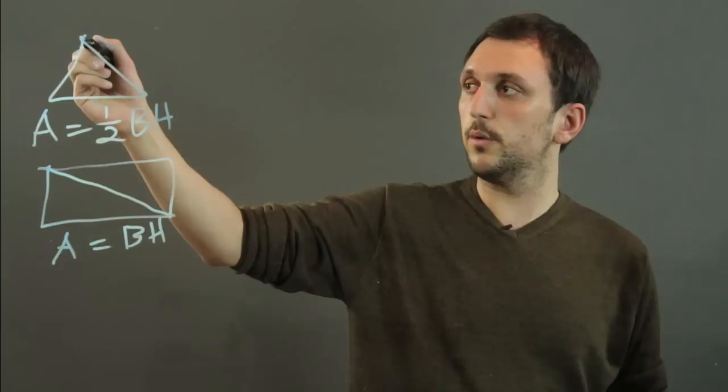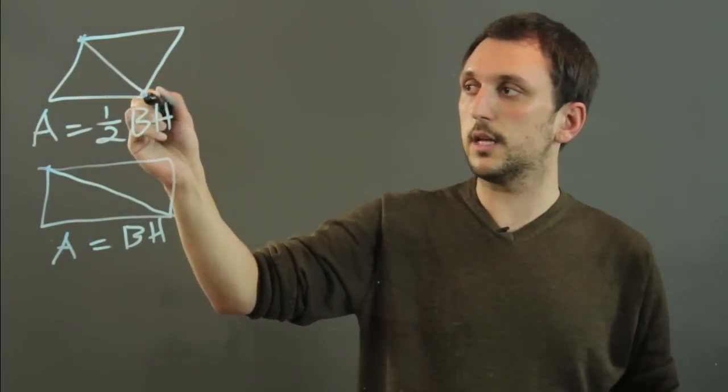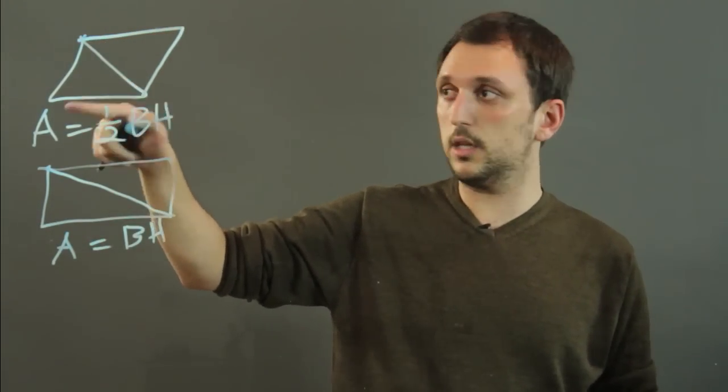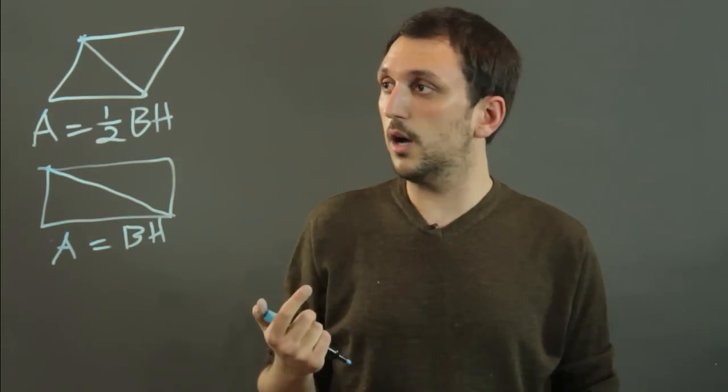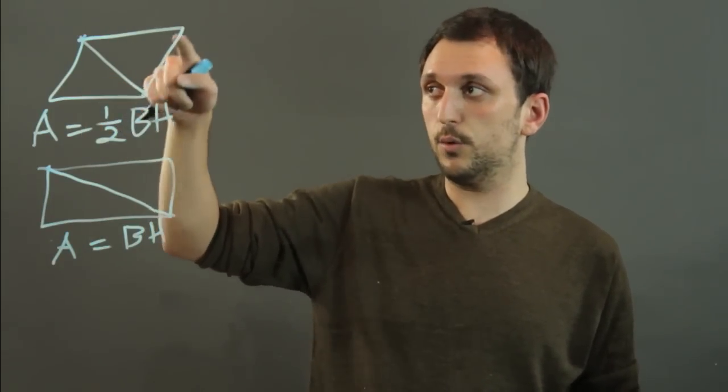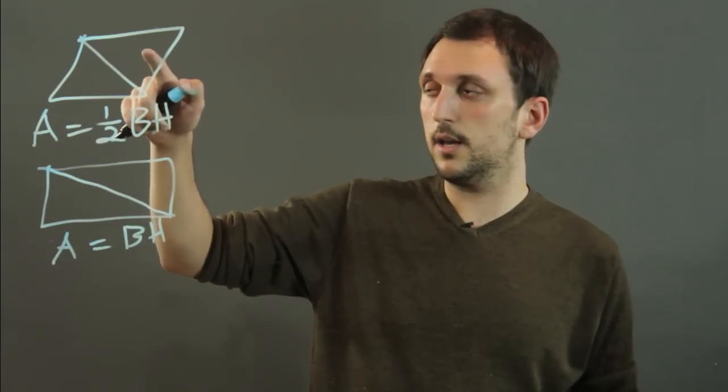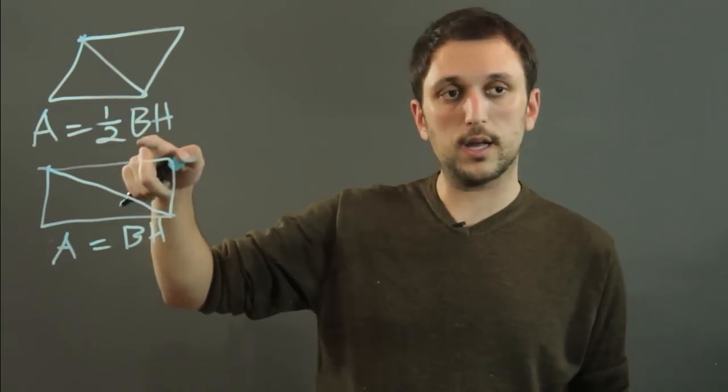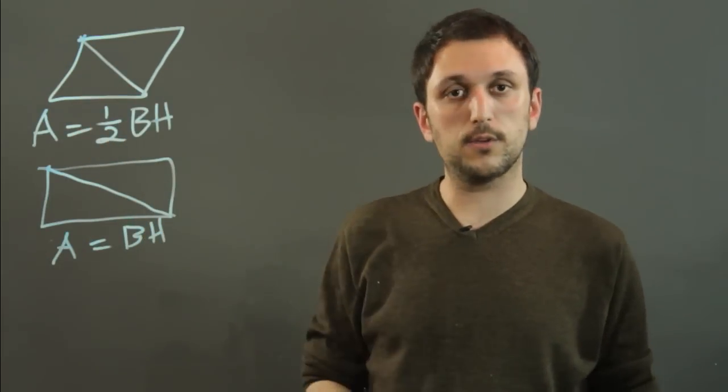With this triangle, we would say like this, and now we have what's called a parallelogram, which is a form of quadrilateral with one pair of parallel lines. And again, this whole thing would be area equals base times height, and just one-half of it, which is a triangle, is one-half base times height.